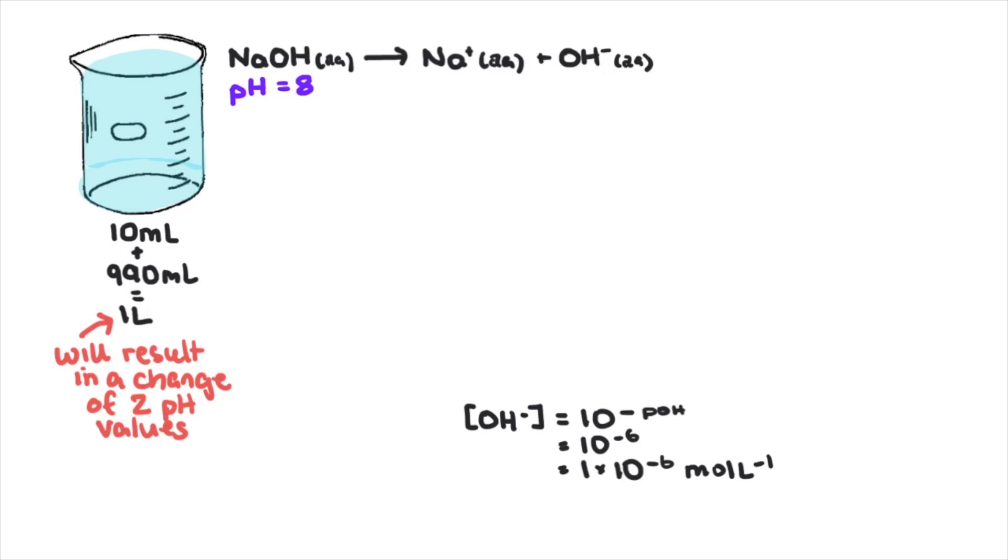Because it's being diluted, we can use the c1v1 equation. Initial concentration of hydroxide is 1 times 10 to the negative 6, times the volume which is 0.01 liters, that is 10 mL. c2 is the unknown, and the new volume is 1 liter. Solving for c2 gives us this.